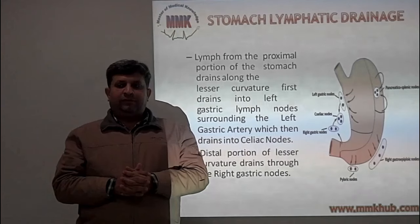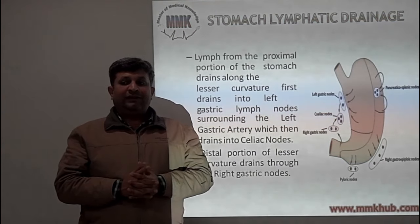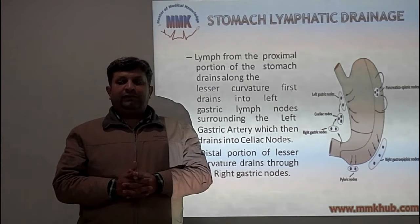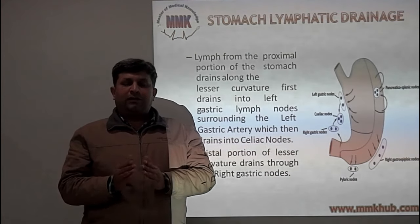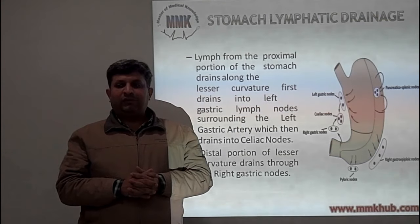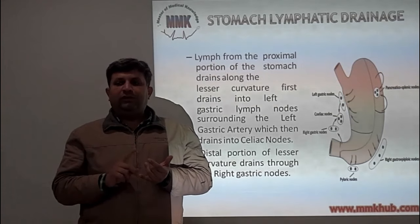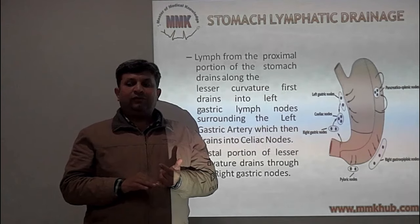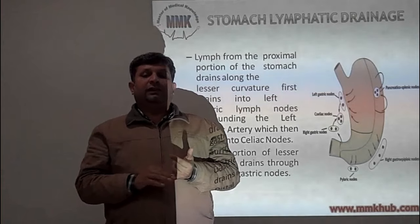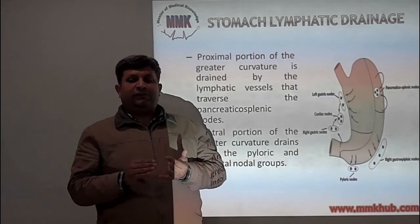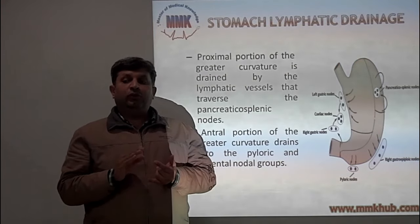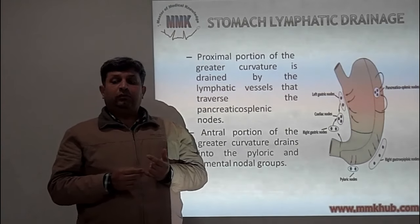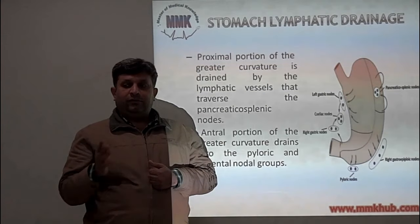Lymph from the proximal portion of the stomach drains along the lesser curvature and first into the gastric lymph nodes along the left gastric artery, which then drain into the celiac nodes. The distal portion of the lesser curvature drains to the right gastric nodes, which again drain into the celiac nodes. The proximal portion of the greater curvature is drained by lymphatics traversing the pancreaticoduodenal and pancreaticosplenic nodes. The anterior portion of the greater curvature drains into the pyloric and subpyloric group of lymph nodes.